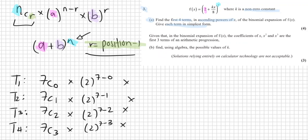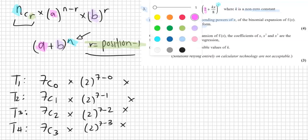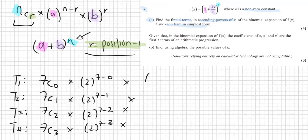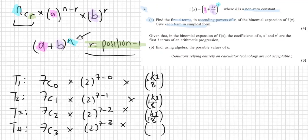Now we look at the b value. Our b position is kx over 8. Remember to keep the plus or minus sign inside the bracket — the sign of the b value matters. It's all to the power of your r, which is 0 for T1, 1 for T2, and so on. In this case, it's plus, so it won't change anything.